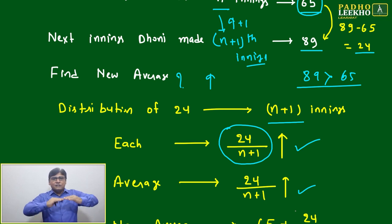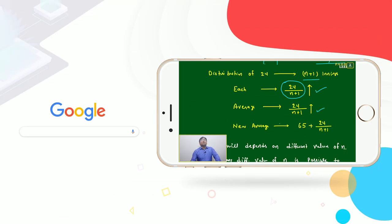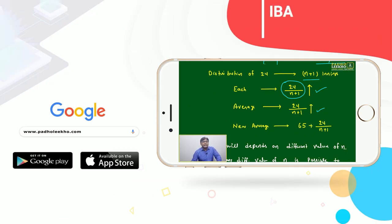Now the issue is we don't have the value of n. The new average we can say will become 65 plus 24 divided by n+1. Very simple.